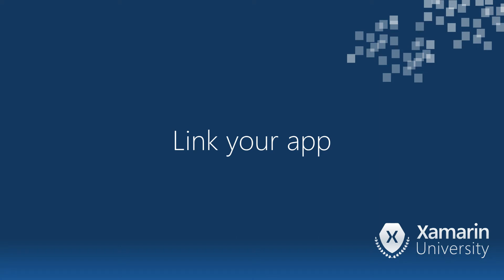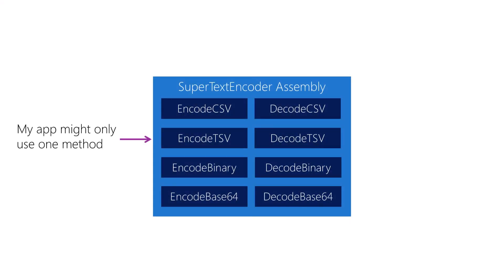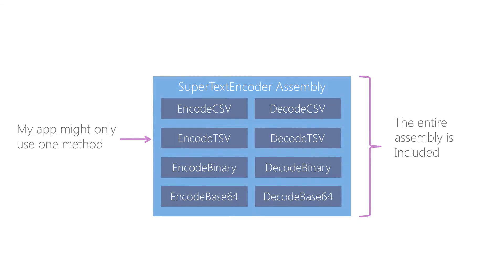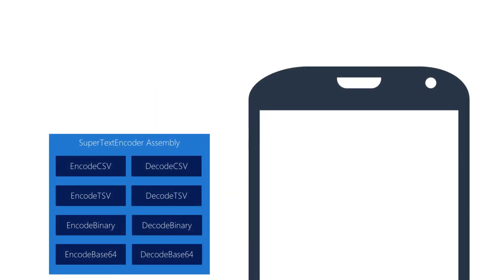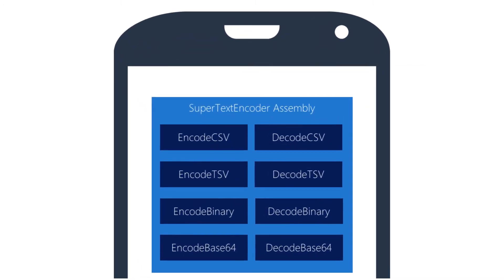Let's talk about linking — this is the process of removing unused executable code. By default, if you use a single type from an assembly, your application will include the entire assembly in your output folder. In the desktop world we don't worry about this too much — there's lots of storage and the .NET framework is likely pre-installed and shared. In the mobile world we don't get to share things, so everything needs to be included in your application package. If you use types from several different assemblies, your app gets big really fast, and this is where the linker comes in.